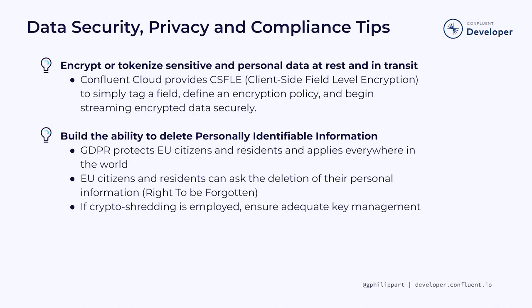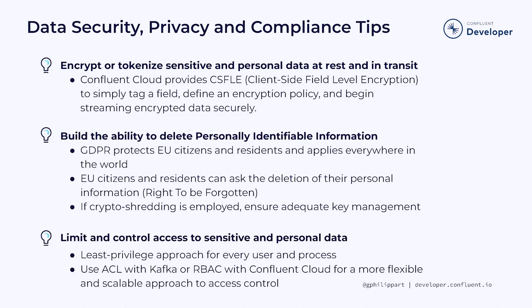Secondly, building the ability to delete PII data is also crucial for data privacy. With GDPR protecting EU citizens and residents, it's essential that organizations are able to delete personal information upon request. This applies to everyone in the world, not just within the EU. Finally, limiting and controlling access to sensitive and personal data is another important aspect. The best practice is to implement a least privileged approach — every user or process should have only the minimum access necessary to perform their job functions. This can be achieved through the use of ACLs with Kafka. In Confluent Cloud, we also provide RBAC functionality to greatly simplify the management of who can access restricted data.